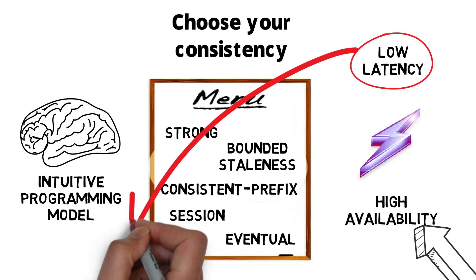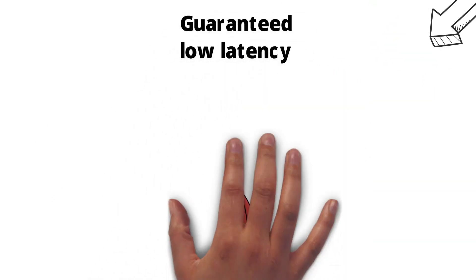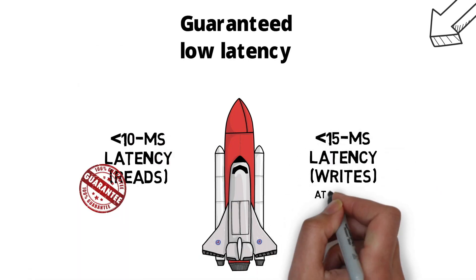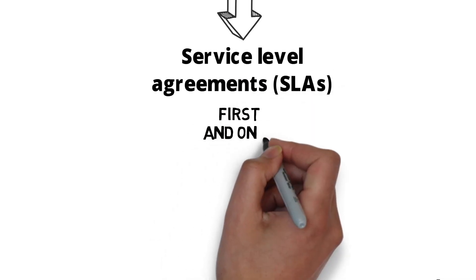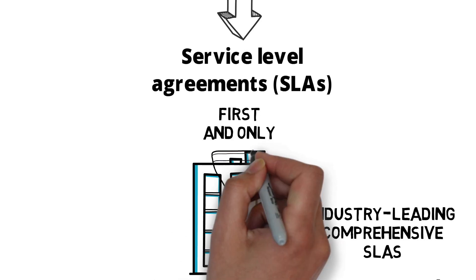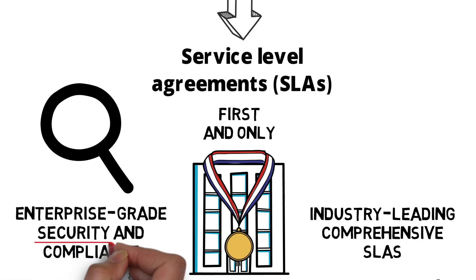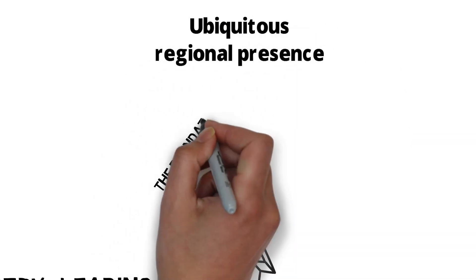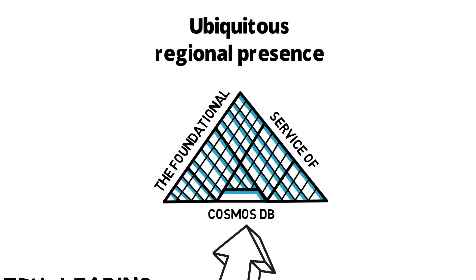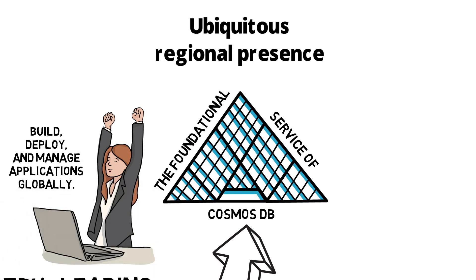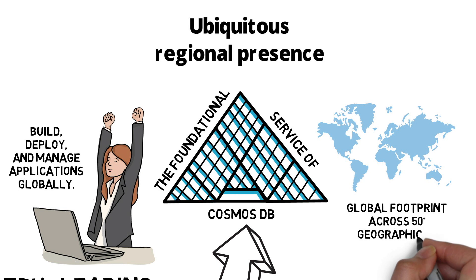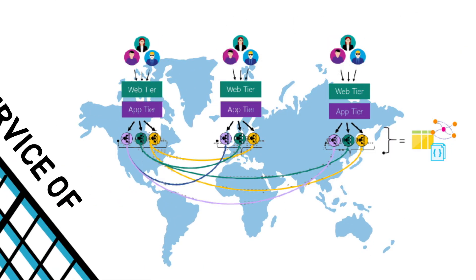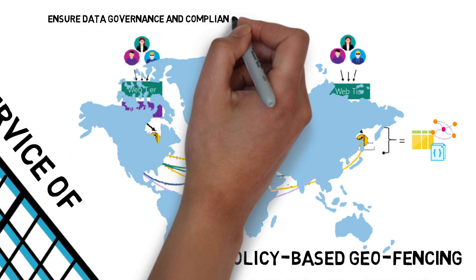Moving on to latency — we are guaranteed low latency: less than 10 milliseconds for reads and less than 15 milliseconds for writes at the 99th percentile. Cosmos DB offers service level agreements and is the first and only to offer industry-leading comprehensive SLAs at enterprise-grade security and compliance. Cosmos DB also offers security with encryption applied automatically for both new and existing customers in all Azure regions. The foundational service of Cosmos DB means our applications are highly available, and we have a global footprint across 50-plus geographical regions. Because of policy-based geofencing, we can ensure data governance and compliance restrictions.